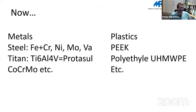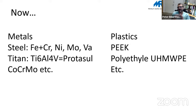Nowadays we have plenty of materials: a lot of metals, all kinds of steel alloys with chrome, nickel, molybdenum, and vanadium; several titanium alloys — the strongest being titanium 6 aluminium 4 vanadium, called protosyl; cobalt chrome alloys and a lot more. This is now a lot of metallurgical knowledge. We also have a lot of plastics: PEEK, polyethylene, and polyurethane — a lot of plastics where we also have to be aware of what we are doing.